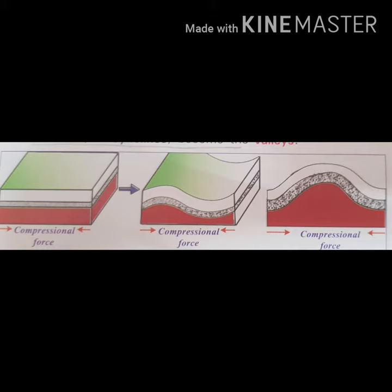Fold mountains comprise the largest and most complex mountain system. The Himalayas were formed by the process of horizontal compression or folding when the Indian plate collided with the Eurasian plate. Newly formed or young fold mountains are higher and have more rugged features like pointed peaks and steep deep slopes. Examples of young fold mountains are the Andes, Rockies, Alps, and the Himalayas, which were formed during the last few million years.